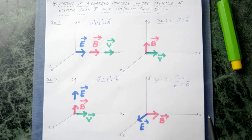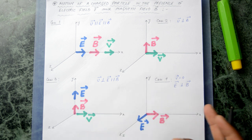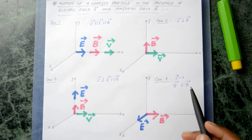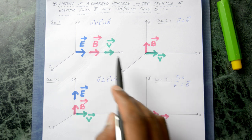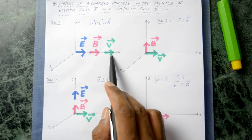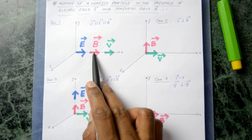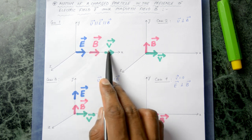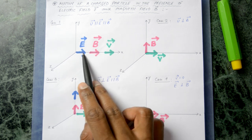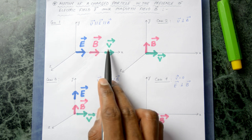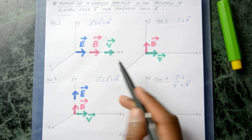I have divided the whole video into four different cases. In the first case we have a situation where the particle is moving in a direction which is parallel to the electric field as well as the magnetic field — so where V is parallel to E is parallel to B. What is the nature of the motion in this case?